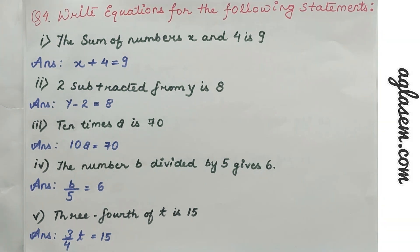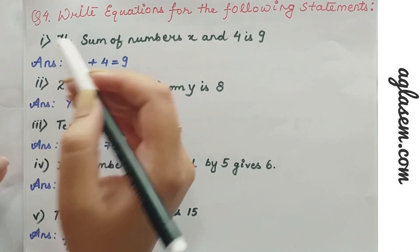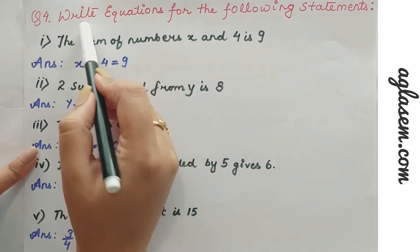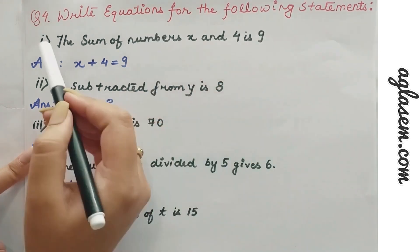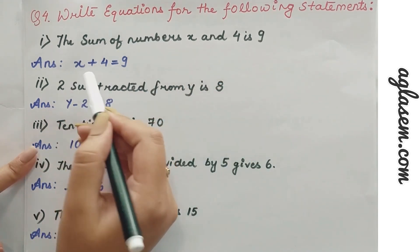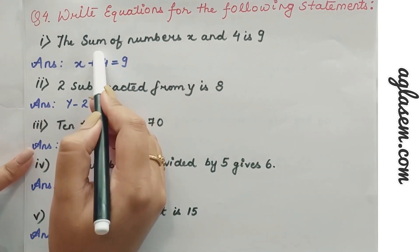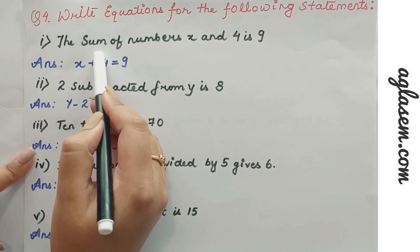Hello guys, welcome back to Aglas M School. Today we will be discussing Class 7 NCERT Mathematics, question numbers 4, 5, and 6 of Exercise 4.1. So let's begin. Question number 4 is: write equations for the following statements. Here we have to write in the form of equations for the provided statements.